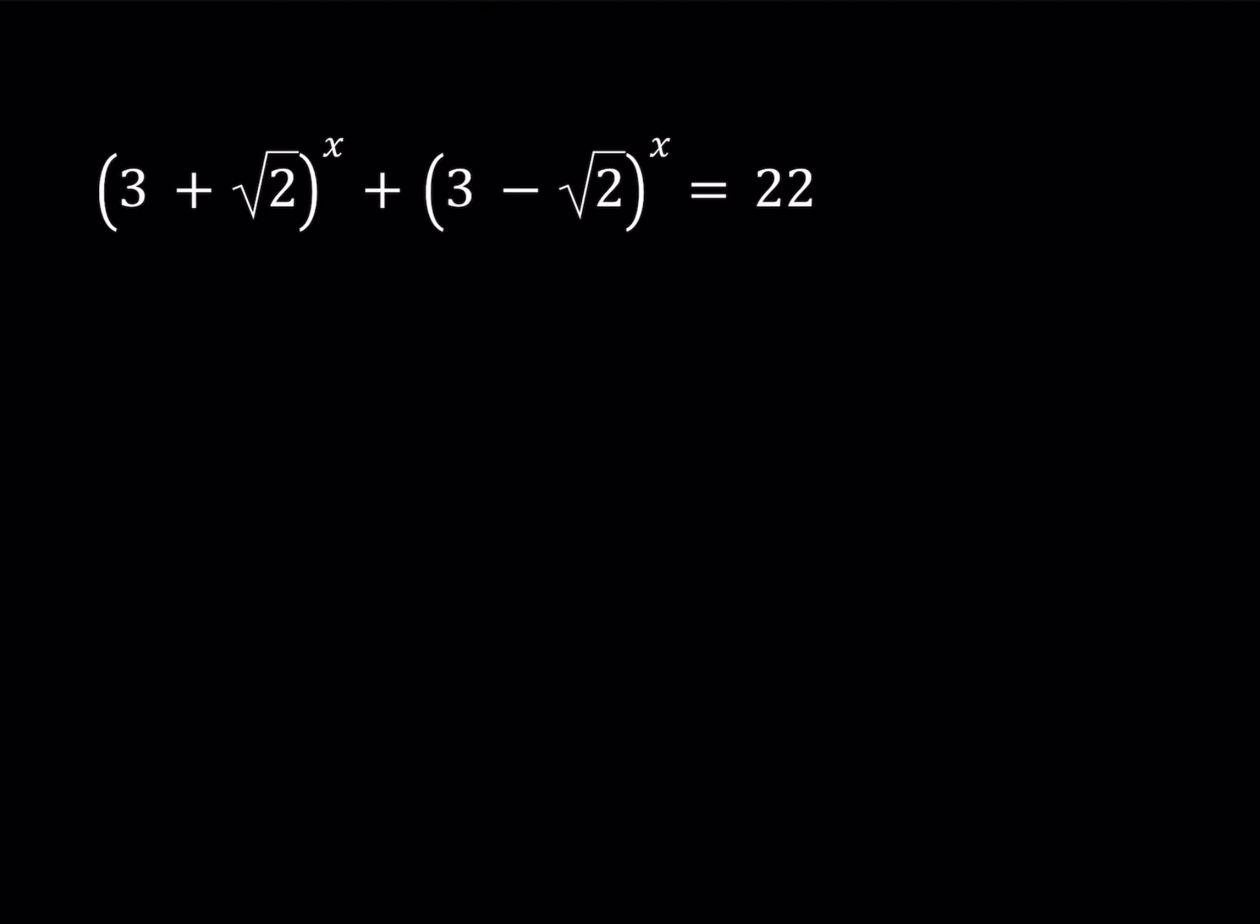Hello, everyone. In this video, we're going to be solving an exponential equation, or should I say radical? Well, actually, it's kind of radical exponential, or exponential radical. So we're going to be looking for the x value here: (3 + √2)^x + (3 - √2)^x = 22. I'll be presenting two methods here, and also briefly talk about a third approach.